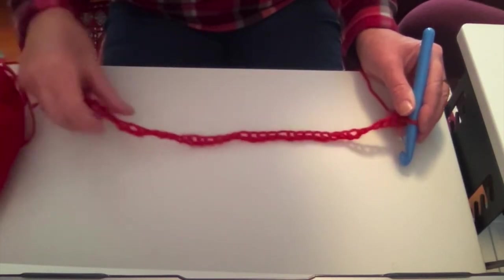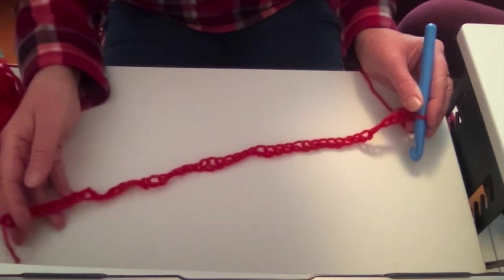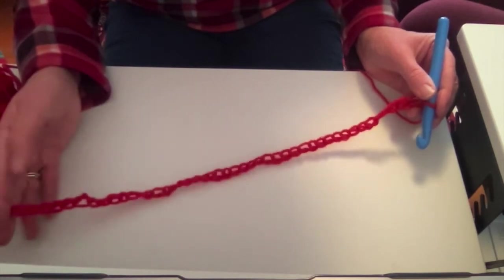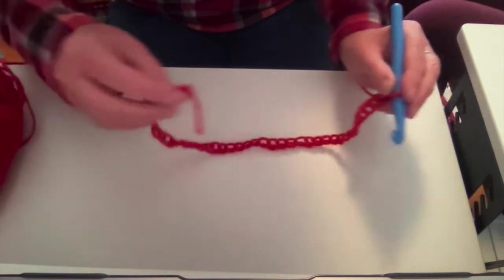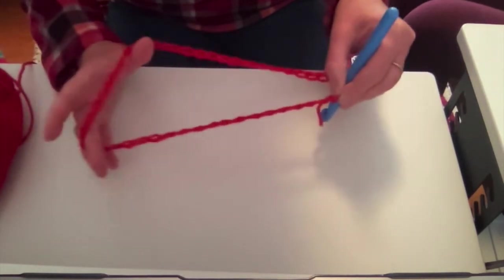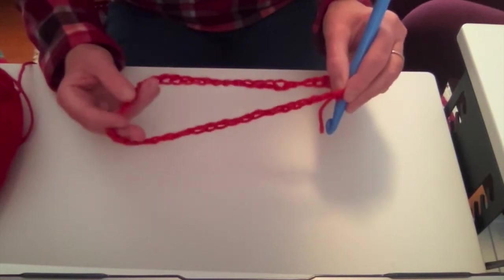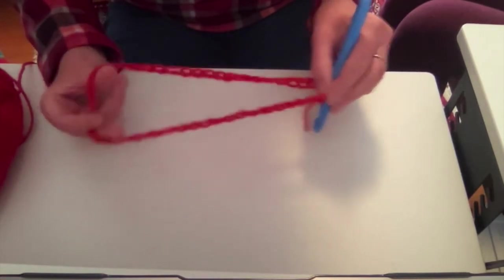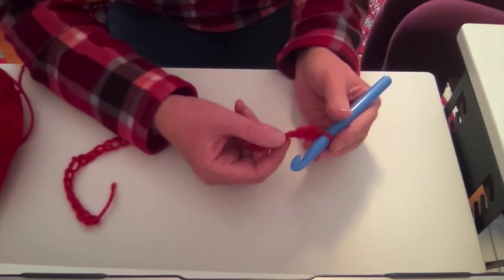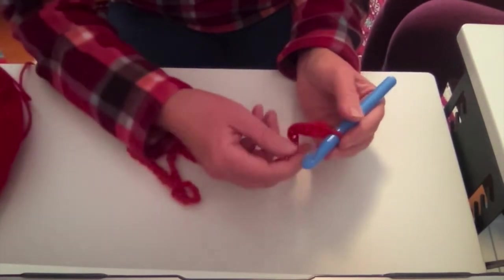So for your beanie, you've made a long chain of single stitches. And you wrap it around your head to make sure that it's not too loose and not too tight. And if you're satisfied with that length, we can move forward. If you think it's too loose, undo a couple chains. Just pull them out. That's fine. If it's too tight, add another chain.